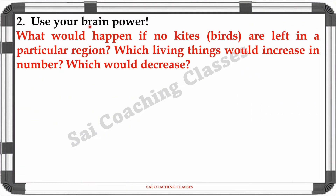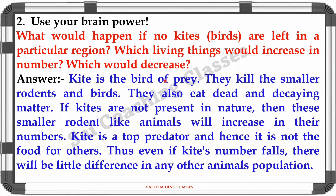Question 2 - Use your brain power: What would happen if no kite birds are left in a particular region? Which living things will increase in number and which will decrease? Answer: Kite is a bird of prey. They kill smaller animals and also eat dead and decaying matter. If kites are not present in nature, then smaller rodents and similar animals will increase in their number.